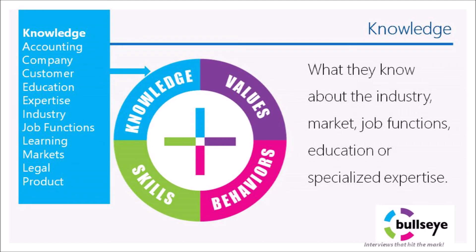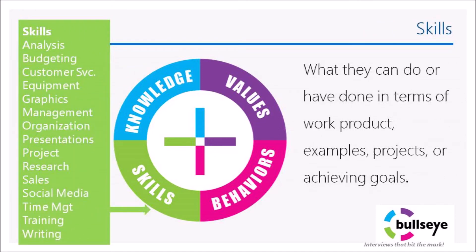Just because they have the knowledge does not mean they actually have the skill. Skills are what they can do or have done, how they have impacted performance, productivity, and the bottom line. Skills can be gauged from past experiences, choices, or skill-based tests. Topics in the skills quadrant include analysis, budgeting, customer service, equipment, graphics, management, organization, presentations, project management, research, sales, social media, time management, training, and writing. Skills are basically what they can do in terms of work product, examples, projects, or goals they have achieved.